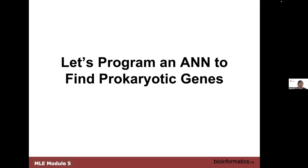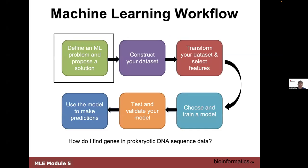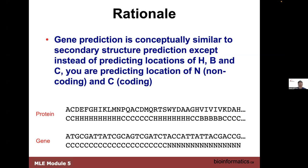If that was your first attempt — and this is not machine learning yet — you might say: I need to do something different. This simulates the process where someone is coding to solve a problem and realizes conventional programming isn't working. So the question becomes: can I try an artificial neural network? The problem we're now tackling is: how do I find genes in DNA using an ANN?